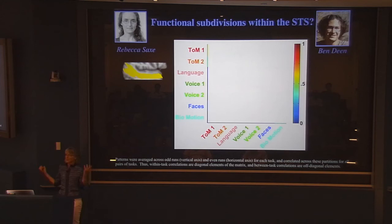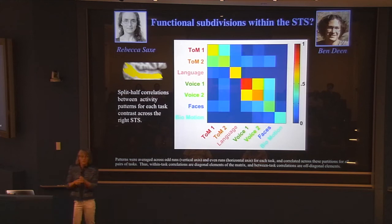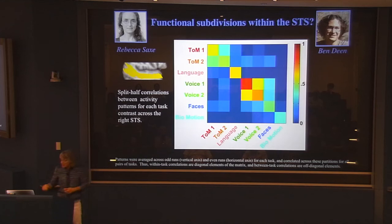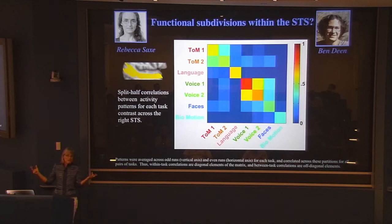If it were all one multifunctional region equally activated by everything, we'd see a strong and even correlation across all contrasts. Instead, we see nice replicability of the pattern between the two halves of each task. There's a correlation between the two different theory of mind contrasts, and between the two different voice contrasts — as there should be. But all other cross-contrast correlations are quite low, meaning there's a different pattern of response for different contrasts. They're not all one big multifunctional thing. There's structure in there.